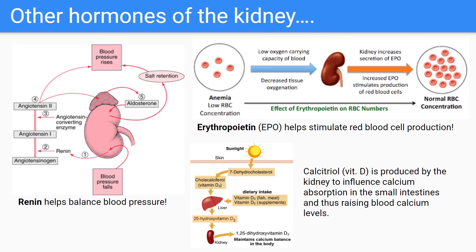Let's wrap up this video by finishing out with our kidney. While we already briefly mentioned the roles of renin hormone, the kidney also secretes a hormone called erythropoietin, or EPO for short, and it's responsible for red blood cell production. Our liver plays a role in secreting this hormone as well, but the kidney is the primary producer. The last kidney hormone is calcitriol. This hormone results in the body increasing calcium absorption in the small intestines, and as a result, raises blood calcium levels.